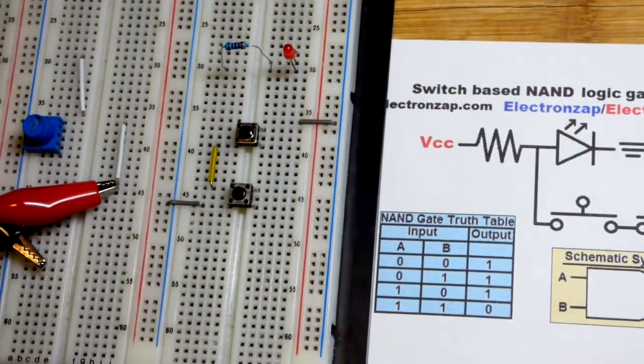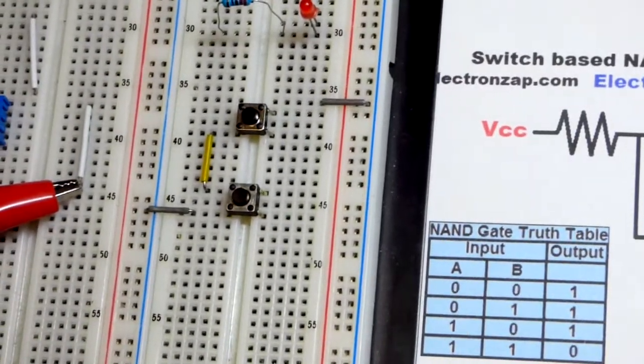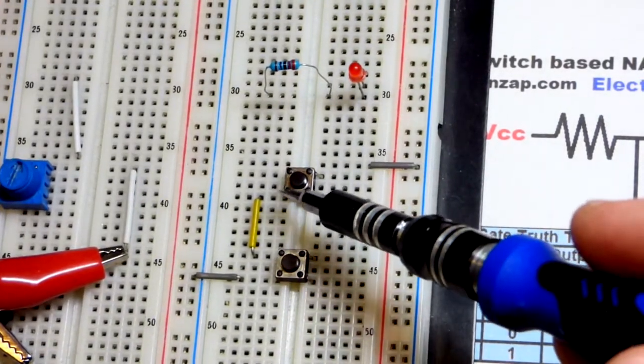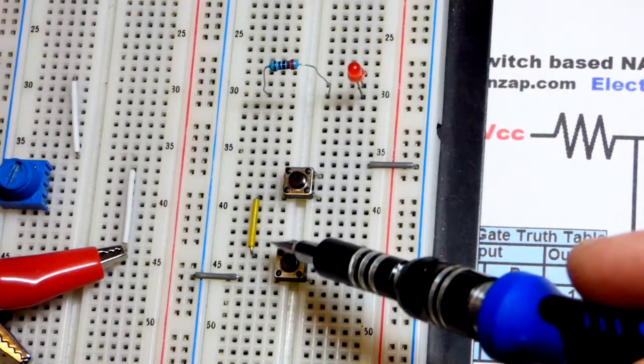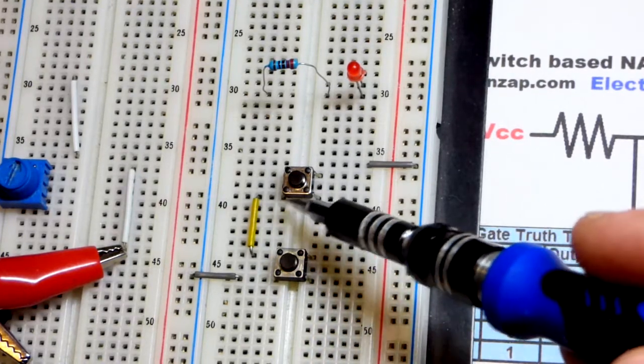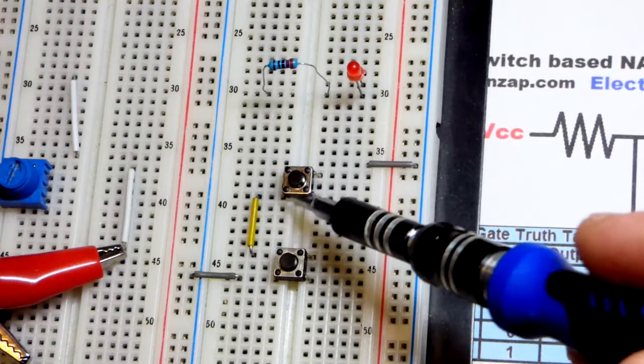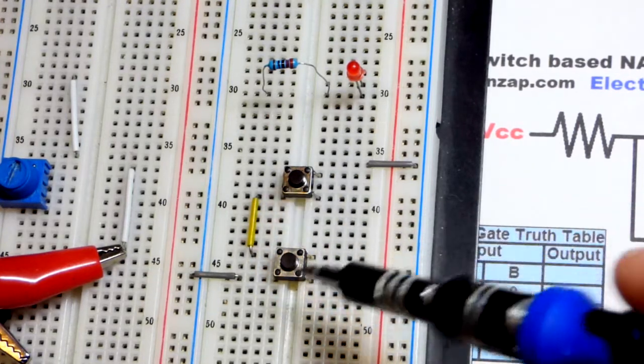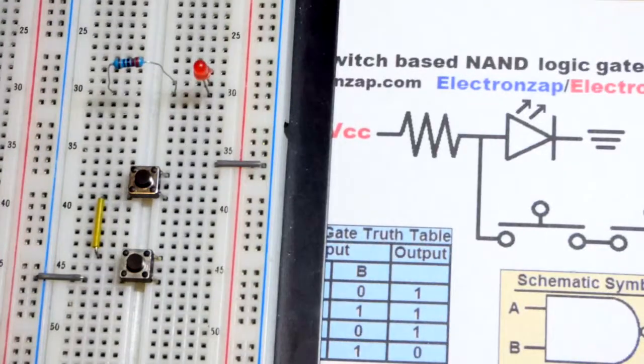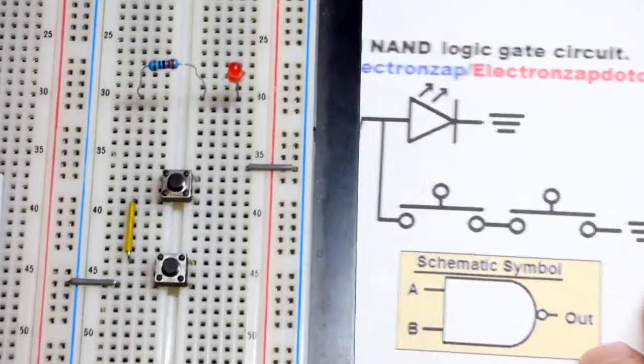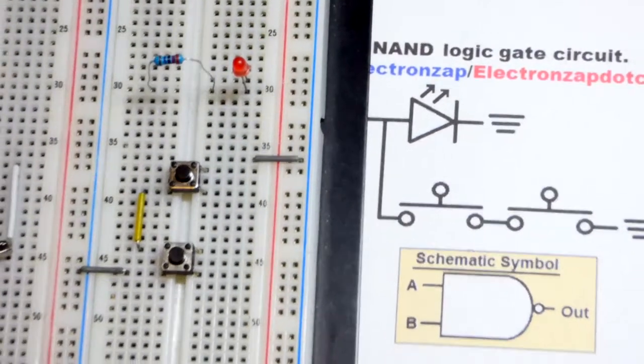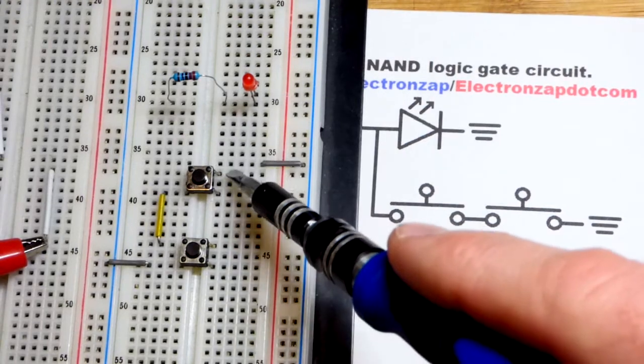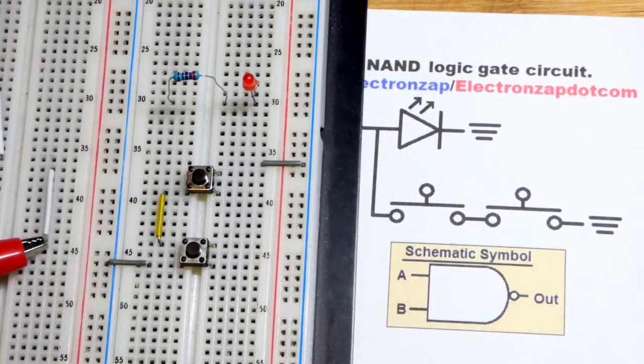I have the push button switches already on the board right there. You can see that we have one side of a switch connected to the other, so these two pins are always connected. These two pins are always connected and we have this jumper making the connection. The other side is going to the negative rail which is ground. The jumper up here is not connected to the switch, that is up one spot.